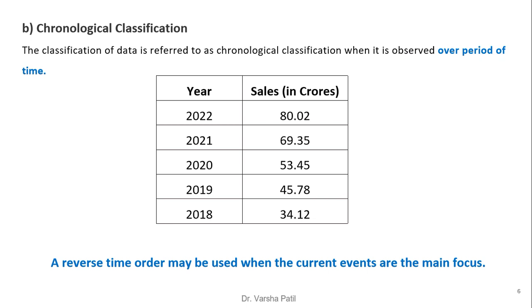Chronological classification refers to the classification of data observed over a period of time, so time is an important parameter. See this example: five years are mentioned from 2018 to 2022, and sales are represented in crores. A reverse time order may be used when current events are the main focus rather than previous years. Generally, it is a preference whether you want to start with the latest year or the earlier years.